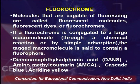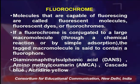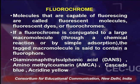We use fluorochromes for those evidences or objects which do not show autofluorescence. If a fluorochrome is conjugated to a large macromolecule through a chemical reaction or by the process of adsorption, the tagged macromolecule is said to contain a fluorophore. Examples of fluorochromes include DANS (diaminonaphthylsulfonic acid), amino methyl coumarin (AMCA), cascade blue, and acridine yellow.